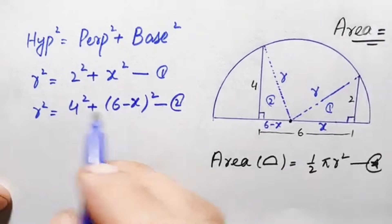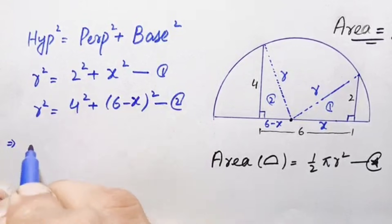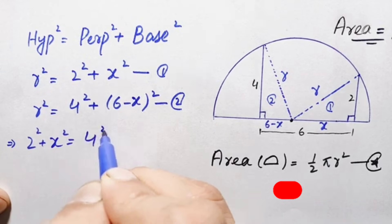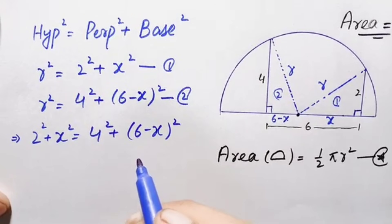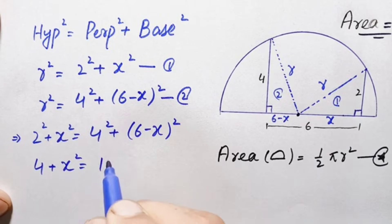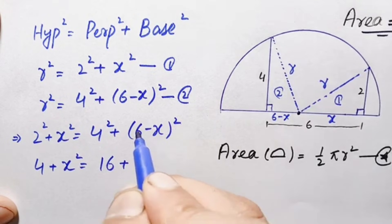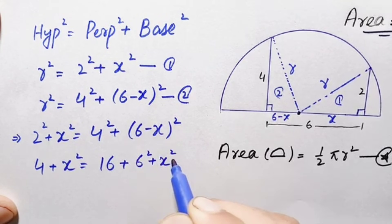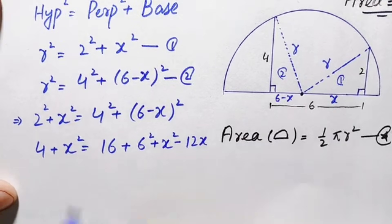Both equations have the same left-hand side, so we set the right-hand sides equal: 2² + x² = 4² + (6 − x)². Simplifying: 4 + x² = 16 + (6 − x)². Expanding (6 − x)² using the identity (a − b)² = a² + b² − 2ab gives 36 + x² − 12x. So we have 4 + x² = 16 + 36 + x² − 12x.